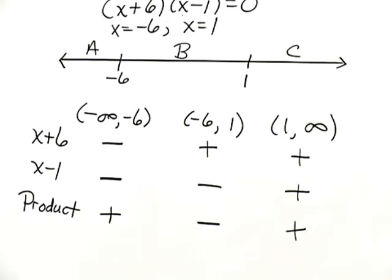That tells us that x squared plus 5x minus 6 is positive for intervals A and C, negative for interval B. We want to know where it's negative. That would give us the answer where it's less than 0. So this interval will be our answer.